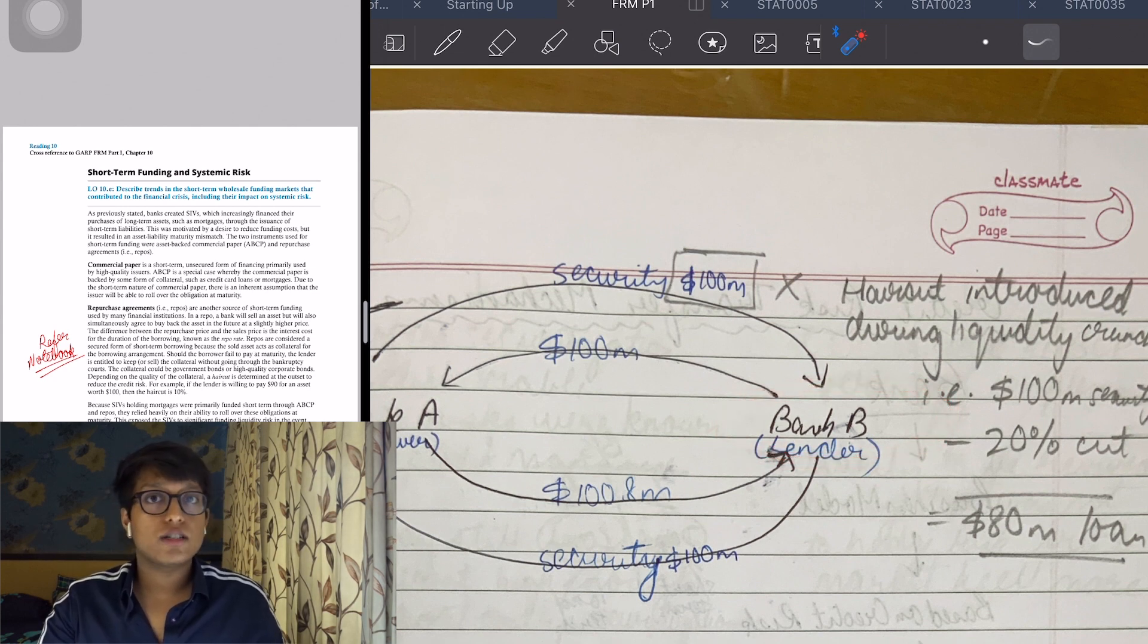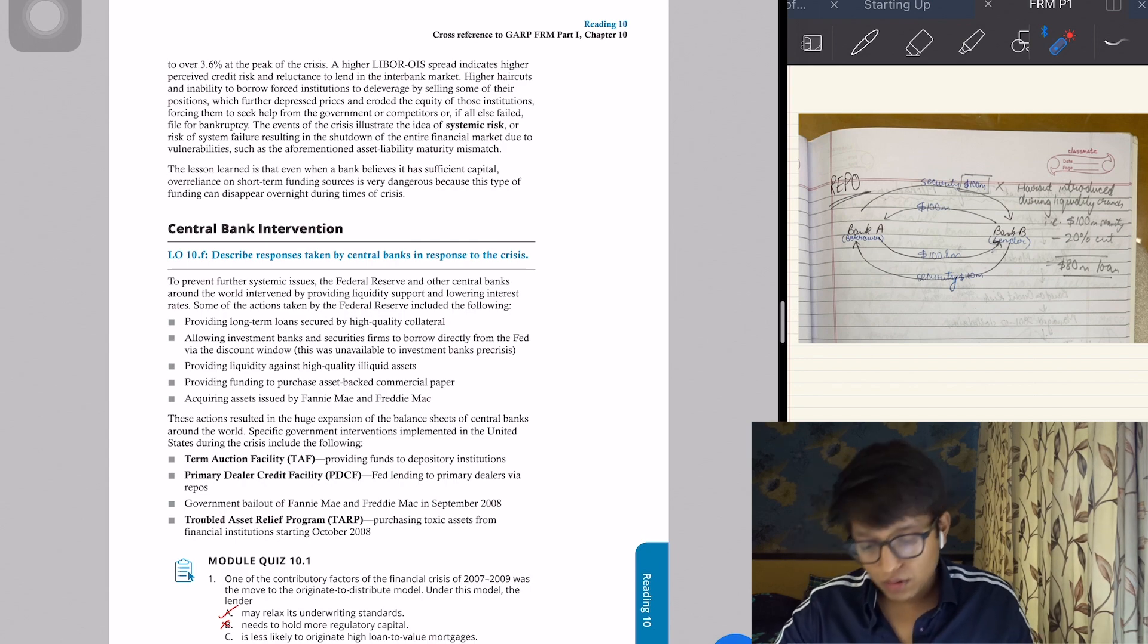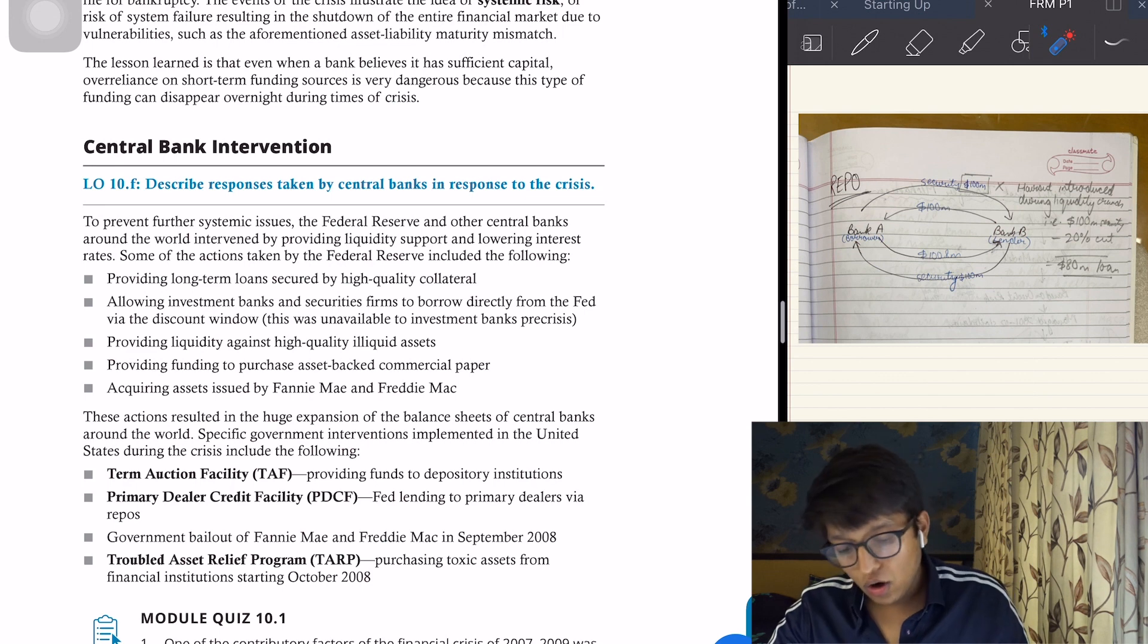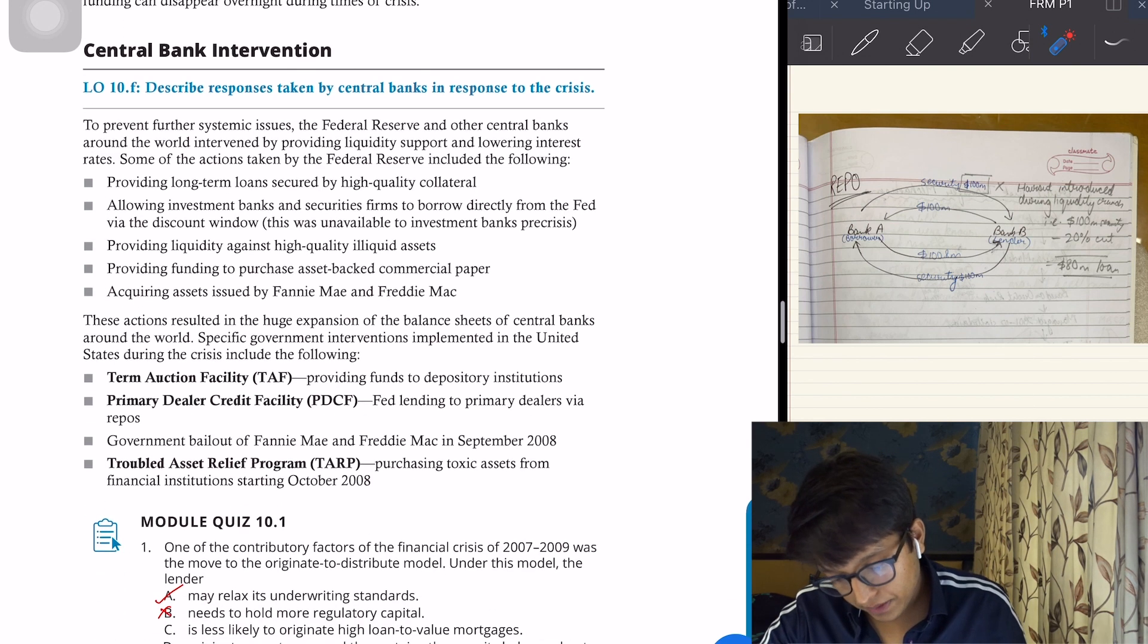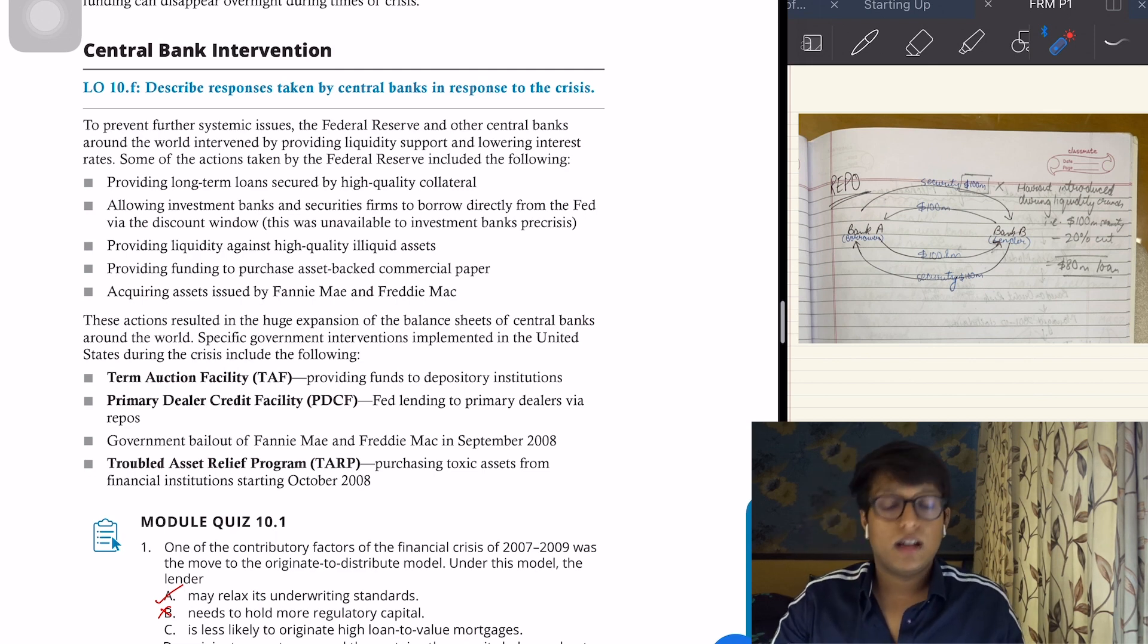Lastly there was central bank intervention. The Fed intervened and provided long-term loans secured by highly collateralized loans. They allowed investment banks to borrow directly from the Fed for the first time. They provided liquidity against highly liquid assets, and some assets were acquired by government organizations like Fannie Mae and Freddie Mac. The four implementations were: Term Auction Facility - they provided funds to depository institutions. Second, Primary Dealer Credit Facility - Fed lent money to primary dealers via repos. Third, government bailout of Fannie Mae and Freddie Mac. And the last one was Troubled Asset Relief Program - purchasing toxic assets from financial institutions starting October 2008.